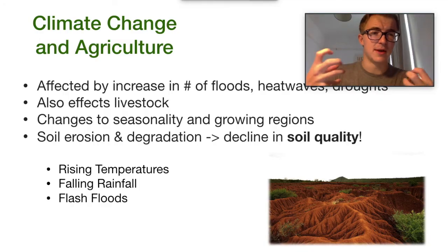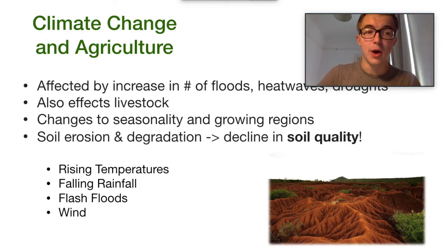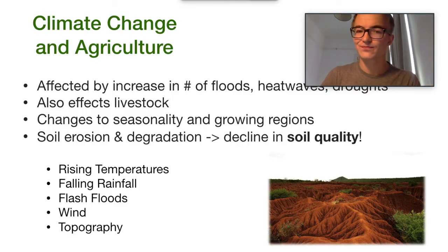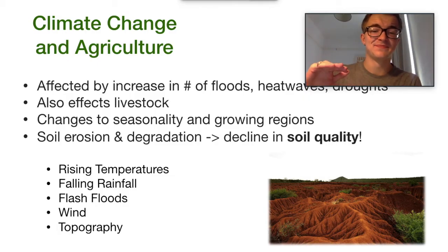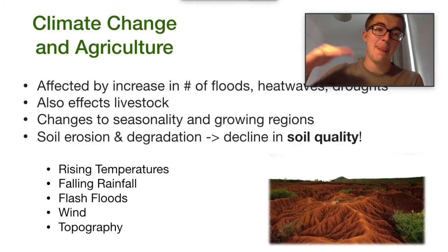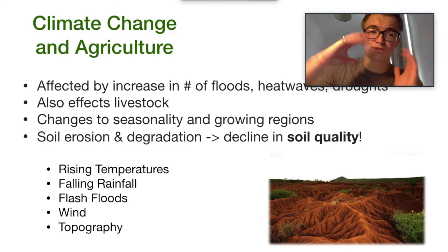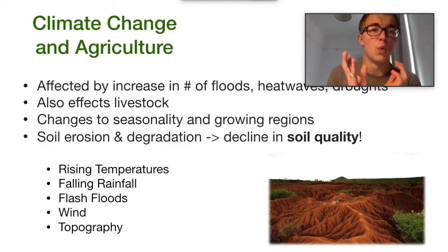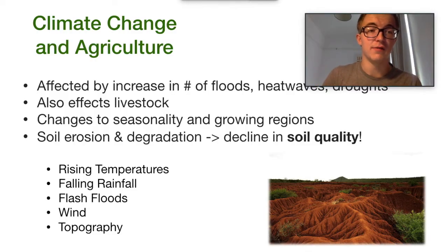Soil erosion and soil degradation are very much interlinked. Wind erosion is very potent in terms of wiping away the layer of soil we need. Topography — the lay of the land — also matters: very flat areas are more susceptible to wind erosion, while valleys with peaks and troughs allow plant life to better survive and stabilise.